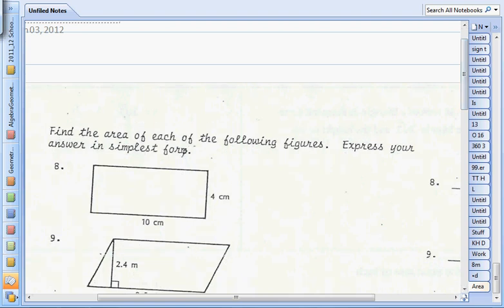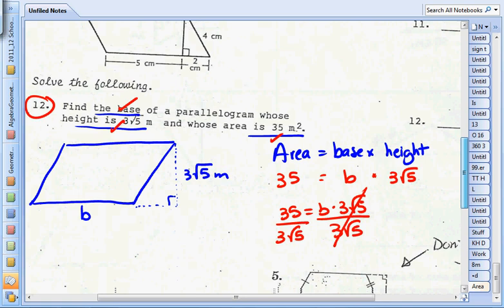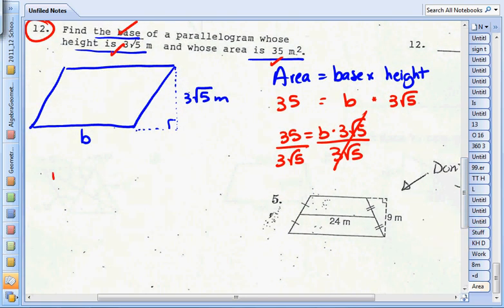Find the area of each of the following figures, express your answer in simplest form. So that means I need to leave the square roots, the radicals, in my answer. The base equals 35 divided by 3√5.